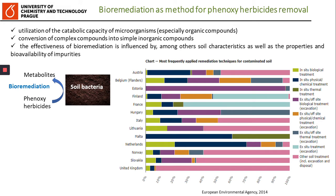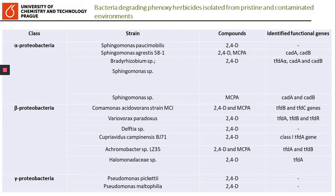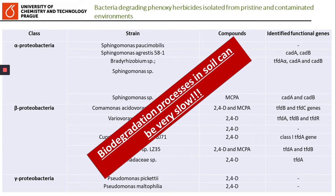One approach to remove phenoxy herbicides from the soil environment is via degradation by soil microbiota in the process called biodegradation. This is achieved mostly by bacteria harboring specific functional genes involved in the phenoxy herbicide degradation pathways. A variety of bacteria have been isolated and proved to harbor functional genes responsible for degradation of phenoxy herbicides. However, the degradation process in soil can be very slow, especially under changing environmental conditions.